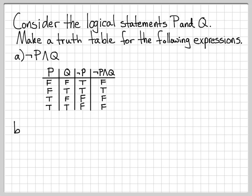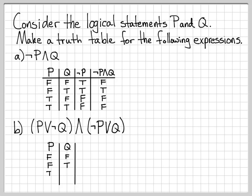That was a pretty simple one. Let's do a slightly more complicated problem. In part B, we'll work with the logical expression '(P or not Q) and (not P or Q)'. This one is a little more complicated, but it still consists only of the logical statements P and Q. To start, we'll set up our table with P and Q.